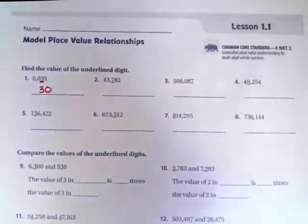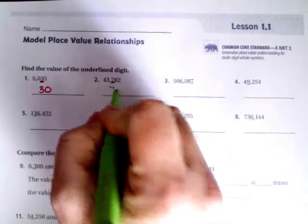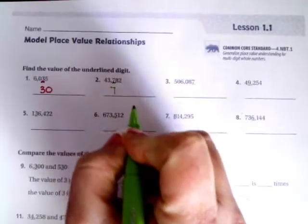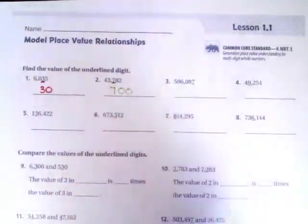Now with the seven, I'm going to drop the seven down and there are one, two numbers after the seven, one, two zeros.